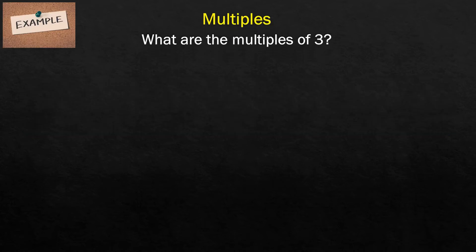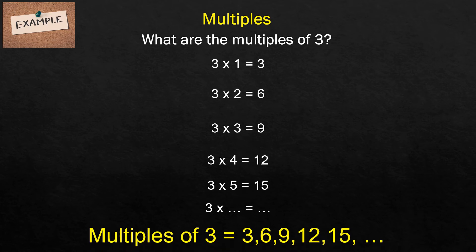Example. What are the multiples of 3? 3 times 1 equals 3. 3 times 2 equals 6. 3 times 3 equals 9. 3 times 4 equals 12. 3 times 5 is equal to 15. And 3 times blank is equal to blank and many others.